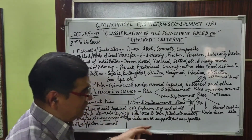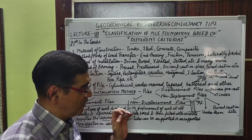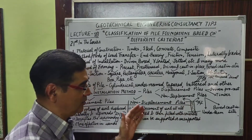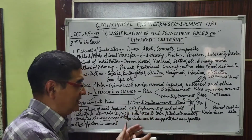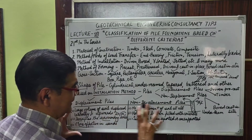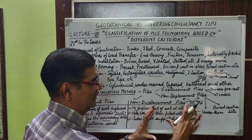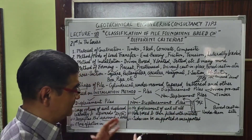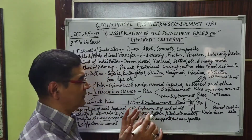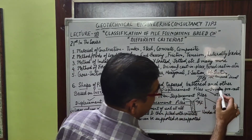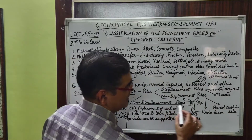These non-displacement piles can be supported or unsupported — supported by way of casing, or unsupported by using bentonite to avoid collapse or falling of the soil while casting. In detail, displacement piles and their types, as well as non-displacement piles and their types, will be covered in future lectures. In brief: displacement piles include driven precast or timber piles, and non-displacement piles include bored cast-in-situ piles.